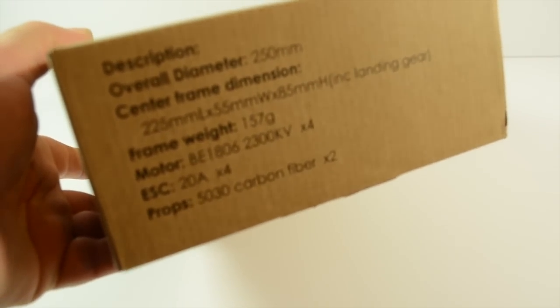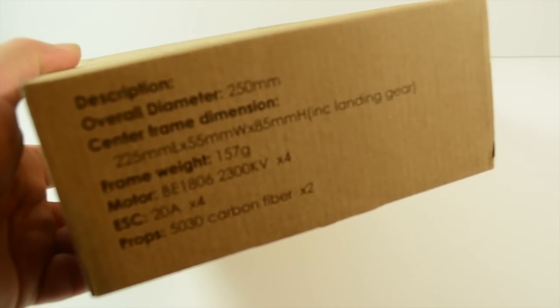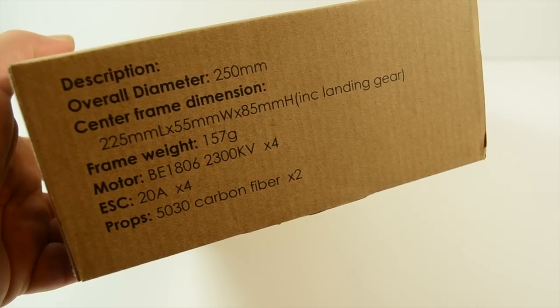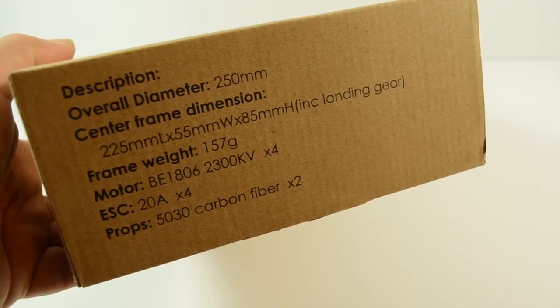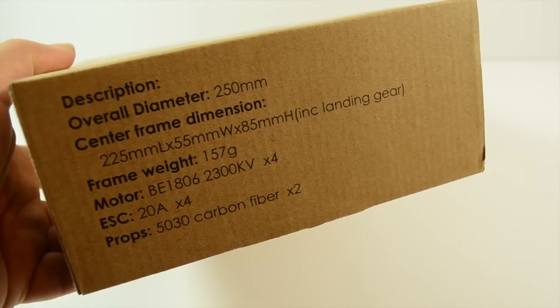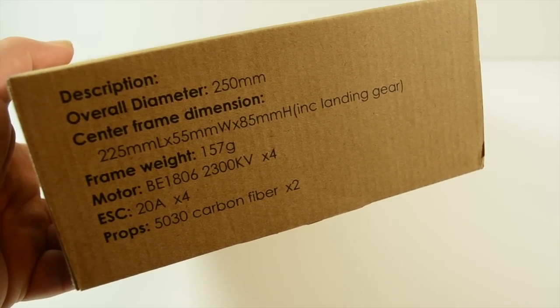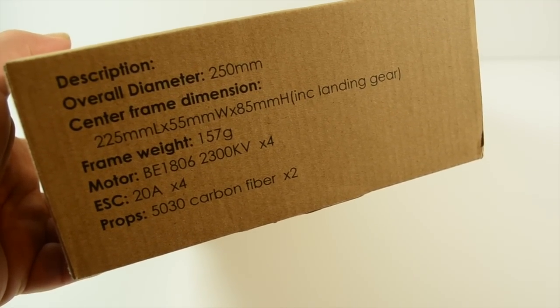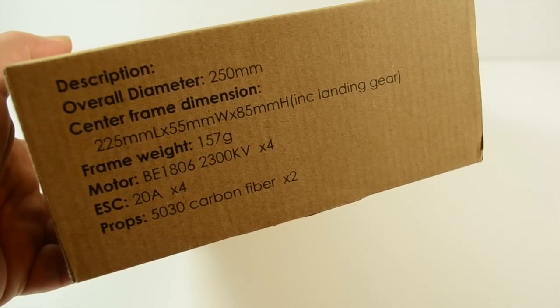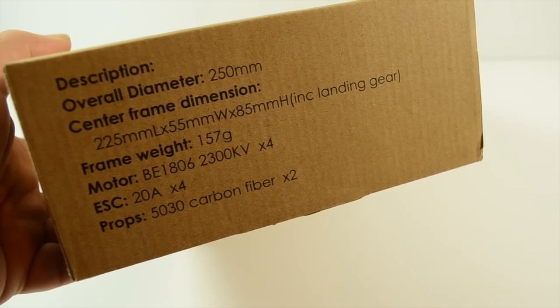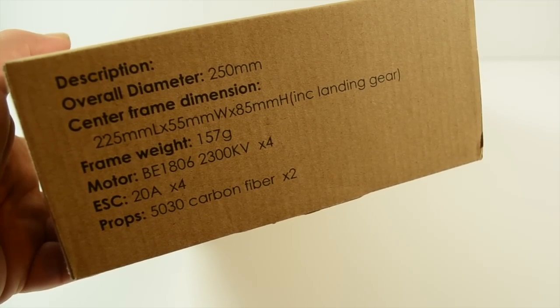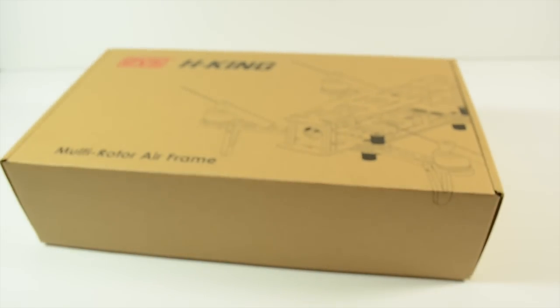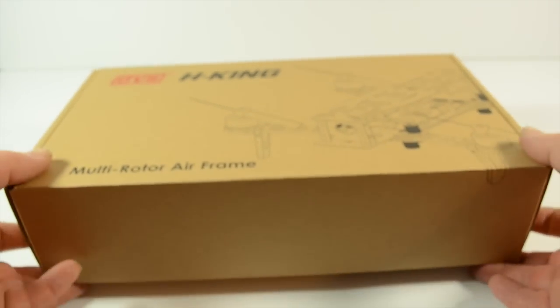Basically overall dimensions 250mm. Center frame dimensions 225mm length, 55mm wide, 85mm height including the landing gear. This one weighs in at 157g. Motors, I believe they're the same as the other ones, BE1806 2300KV times 4, 20 amp ESCs times 4, props 5030 carbon fiber times 2, I believe that will be times 4 unless they expect it to fly on 2.